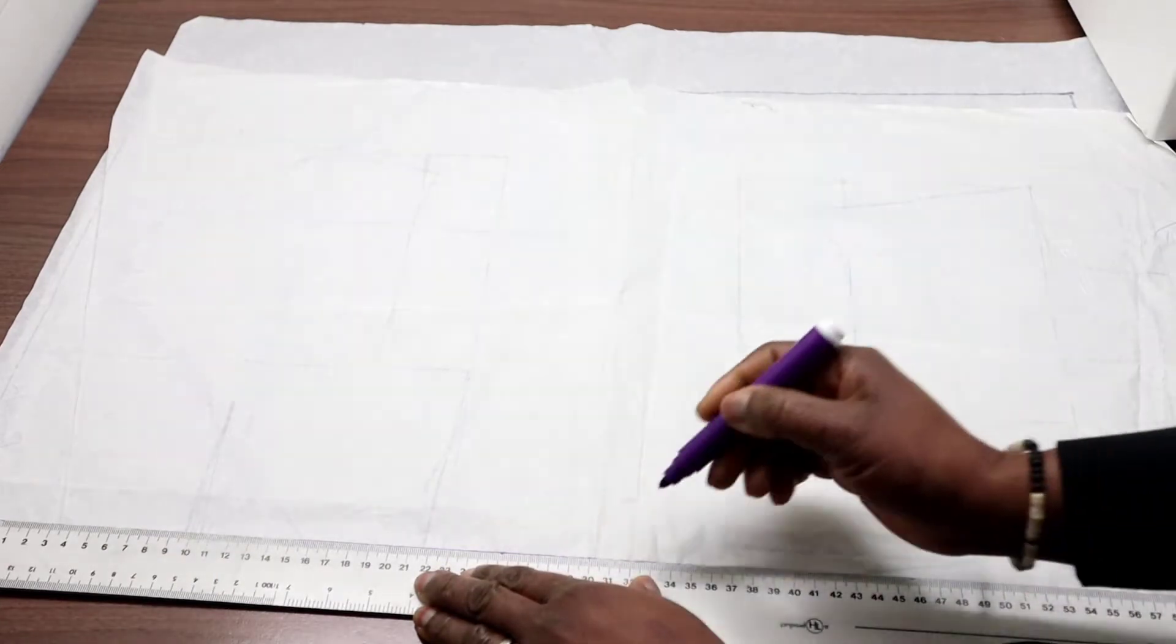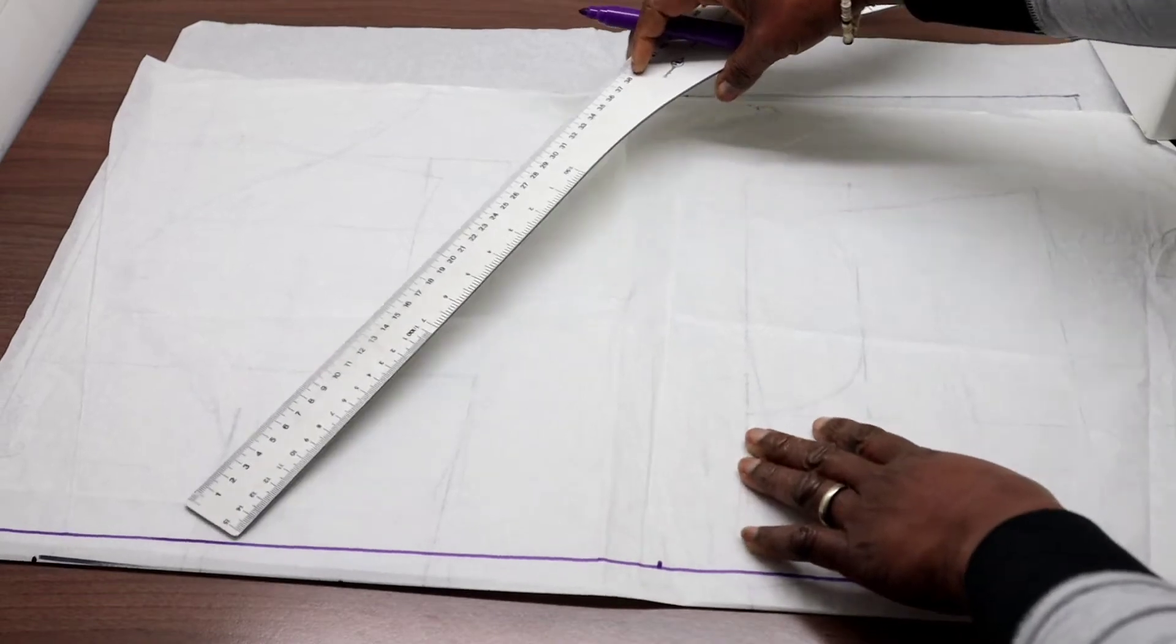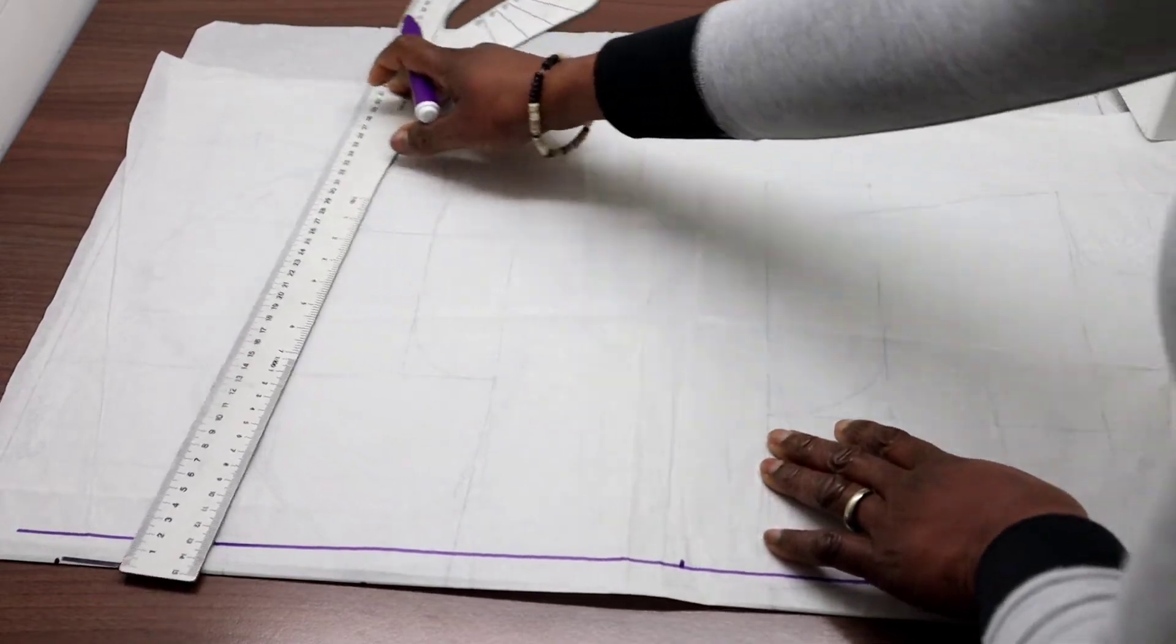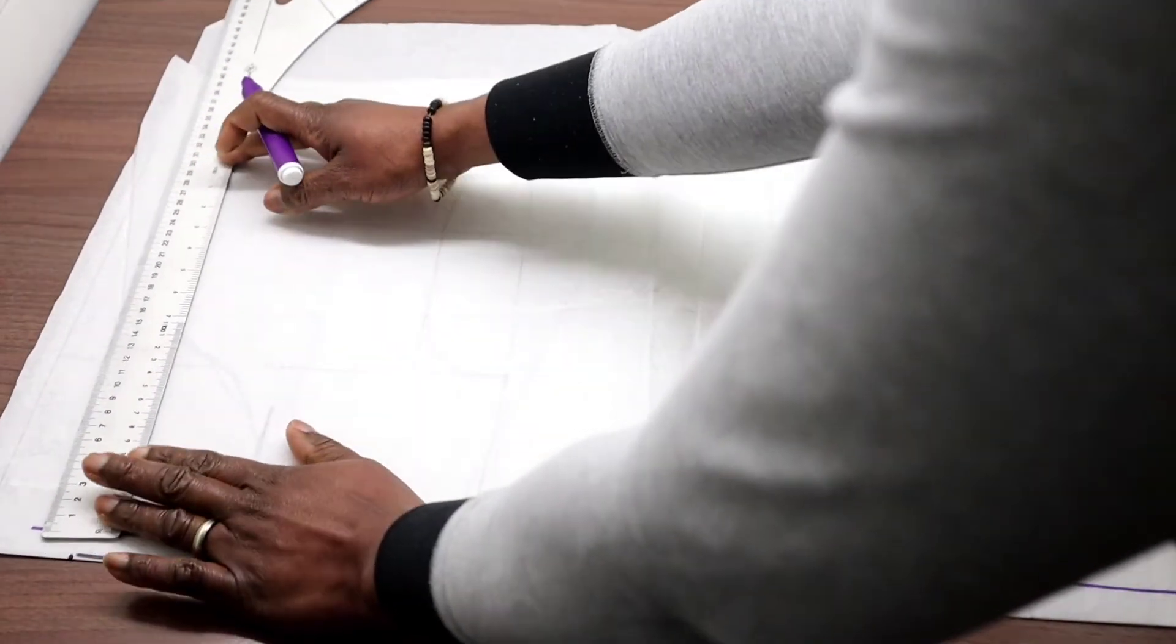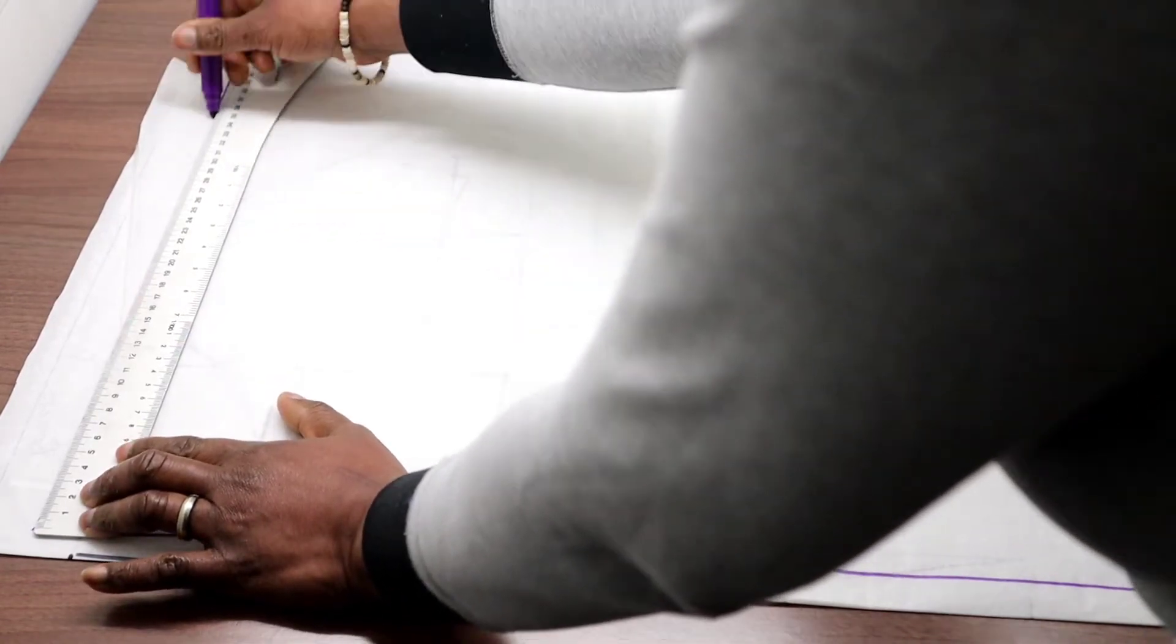I will make a point here for my armhole, 33 cm. The next is the sleeve width. Our sleeve width is the front and back armhole times 0.8 plus 1. So whatever I get, I will draw it here.